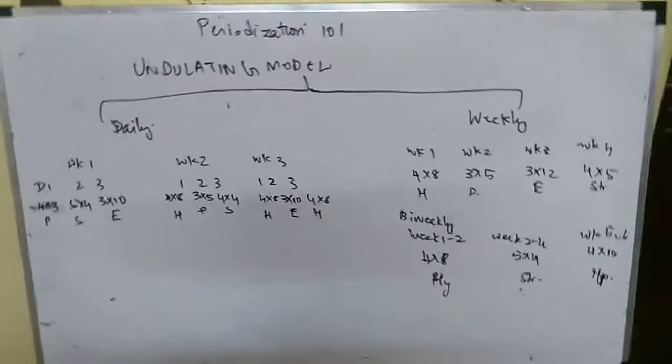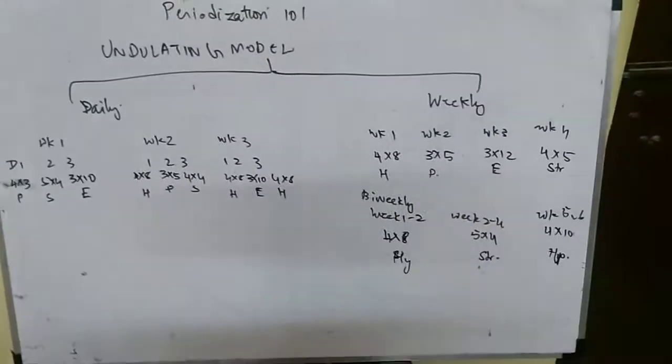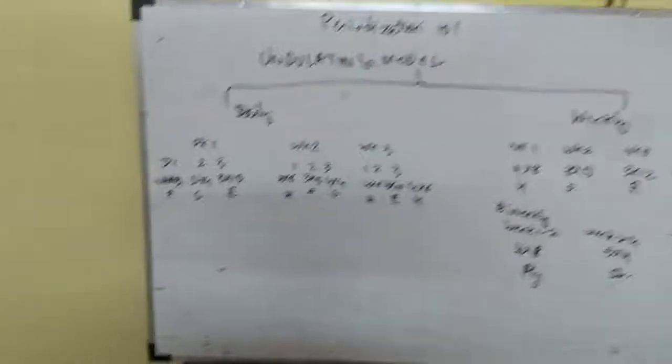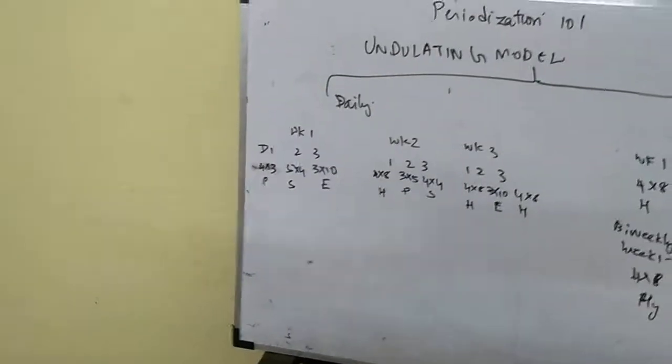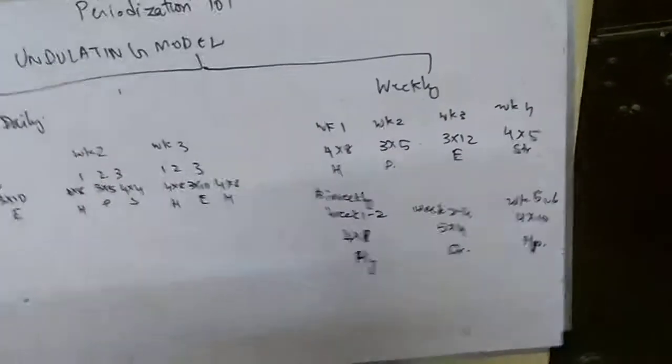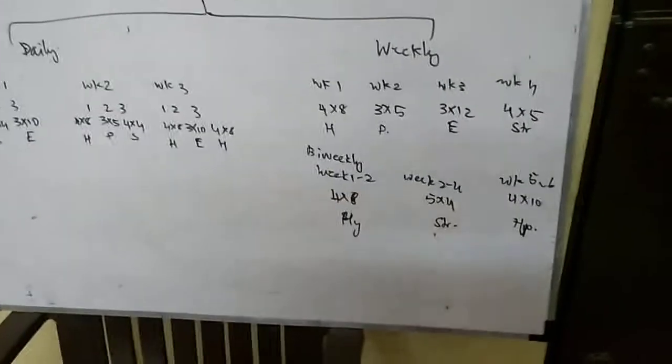It is divided into two types: Daily undulating periodization or weekly undulating periodization. The difference between weekly and daily is the ability trained is changed every day in daily undulating, whereas in weekly undulating, the physical abilities trained are changed every week or bi-weekly.